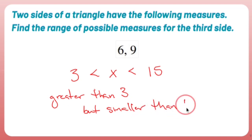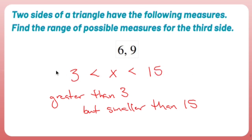This uses the triangle inequality theorem. It basically says that if you needed to connect these, you need something like 3.1, 3.2, or you can have 14.9. You can't have anything bigger than 15 or smaller than three. So anything between three and 15 should do the job.